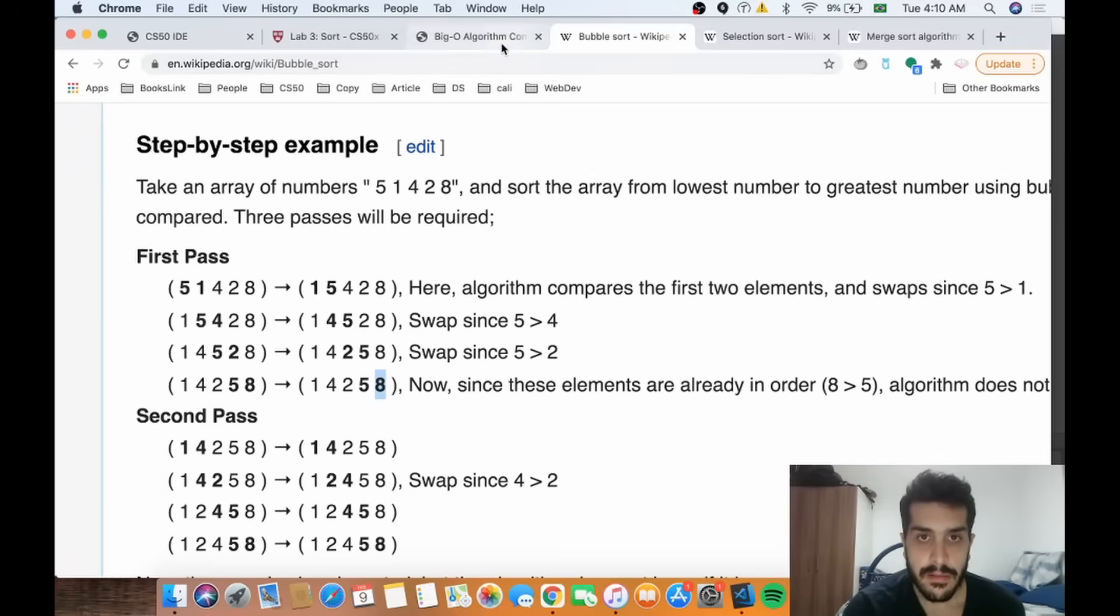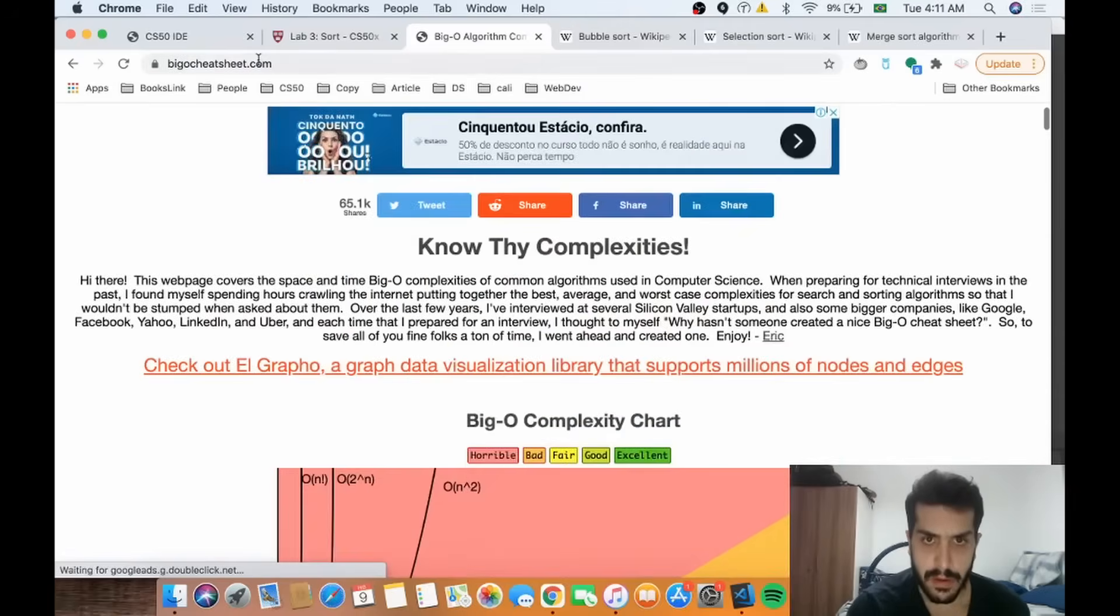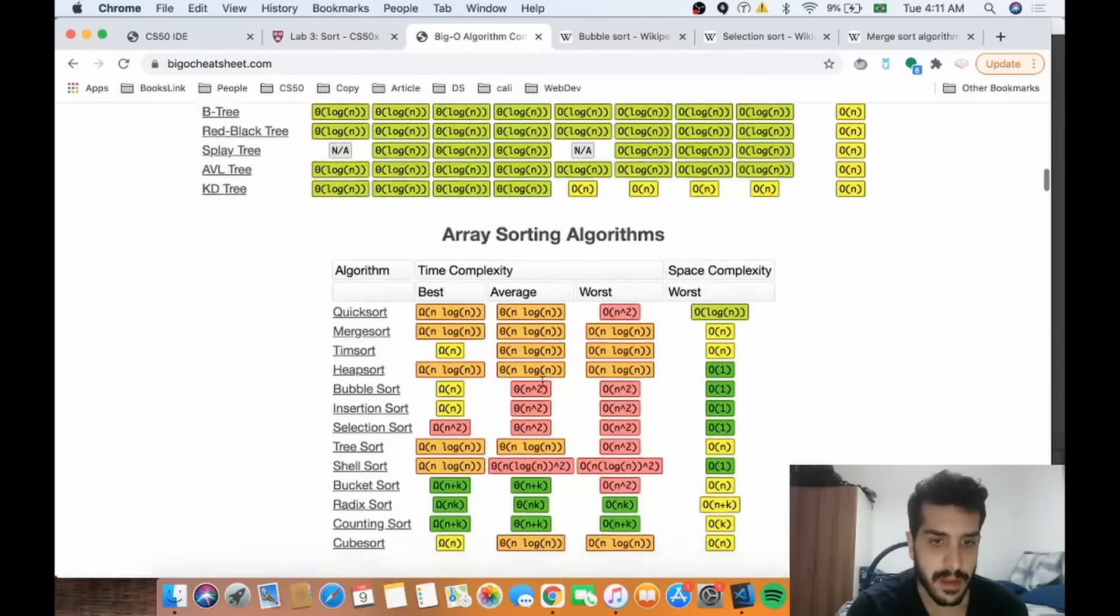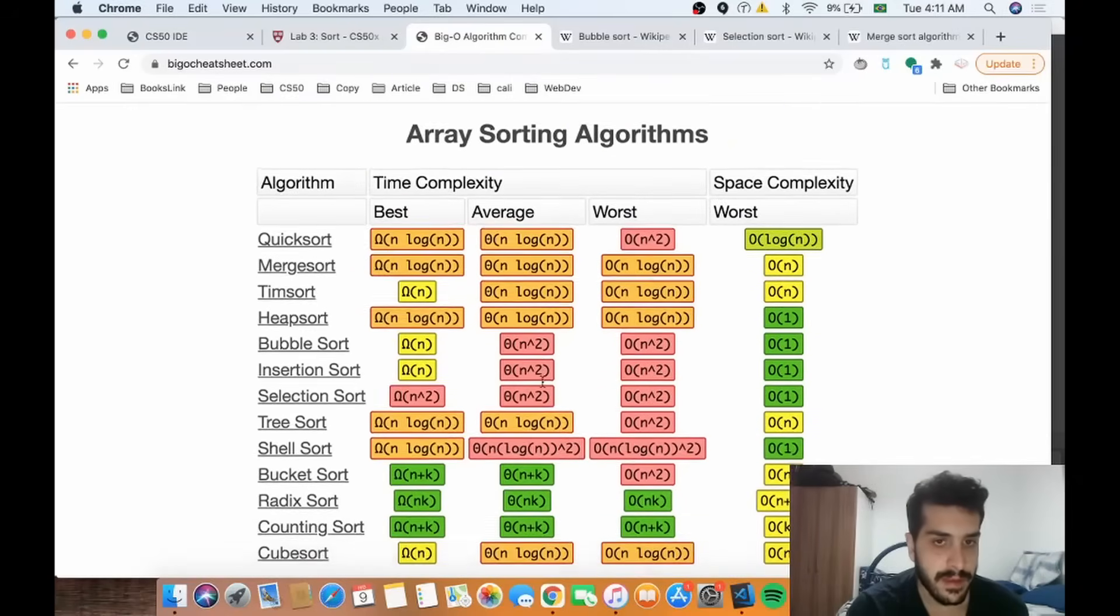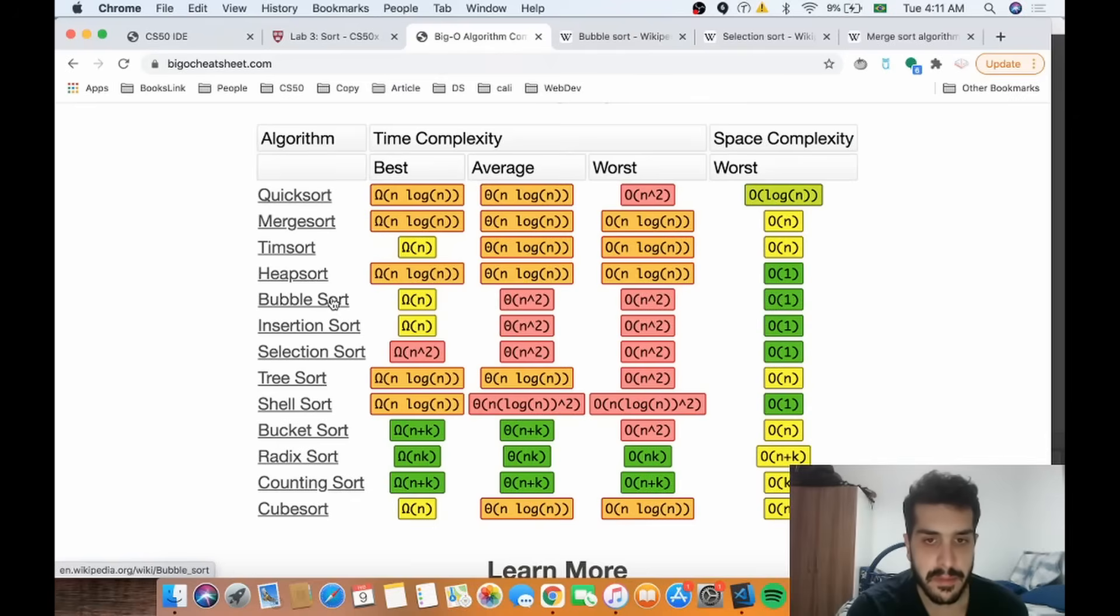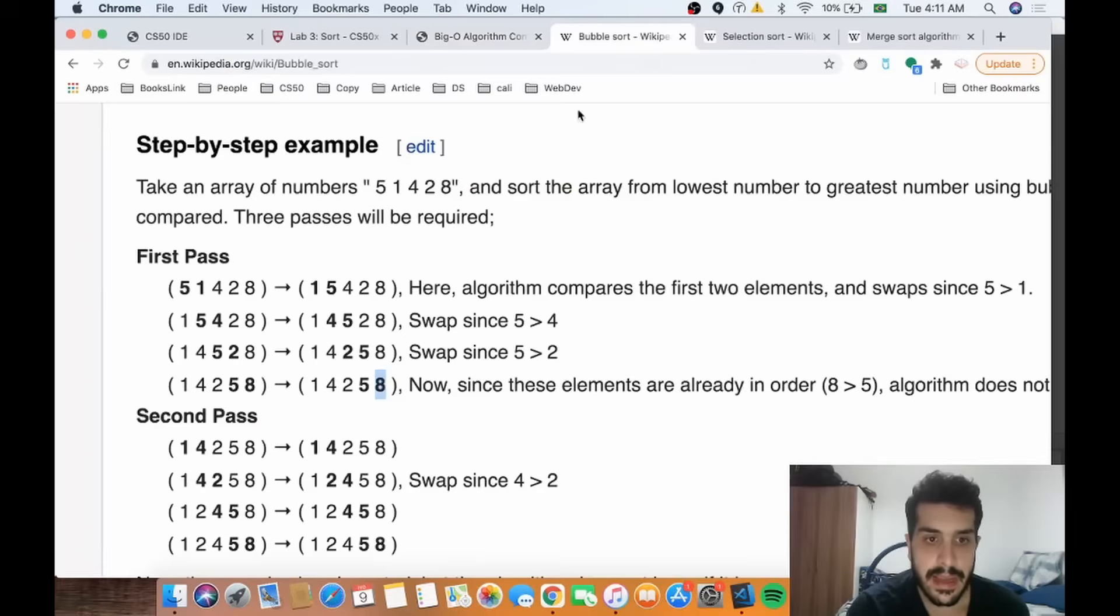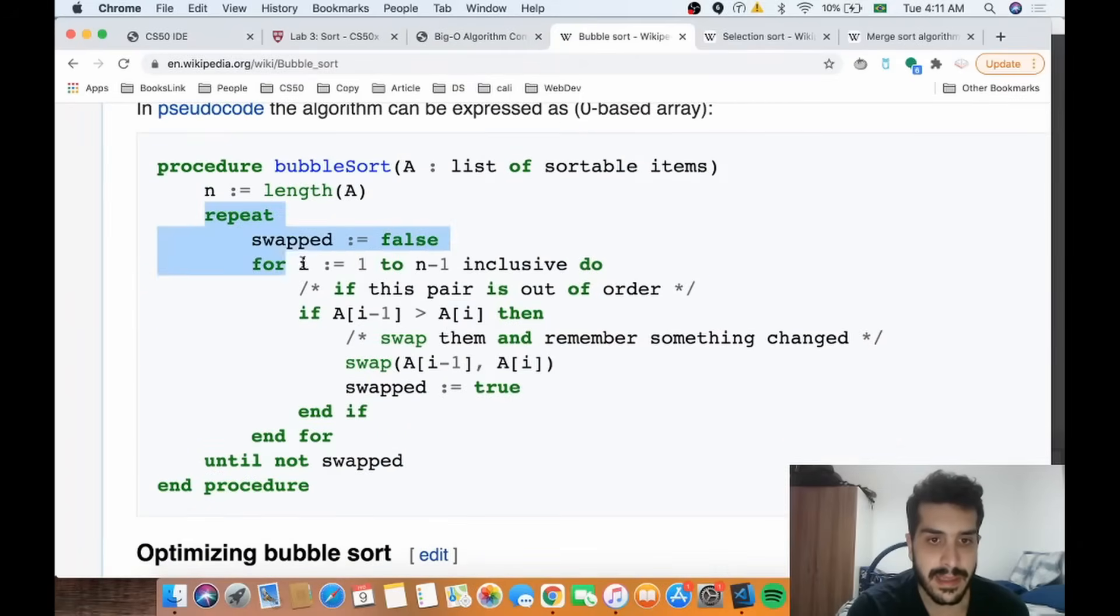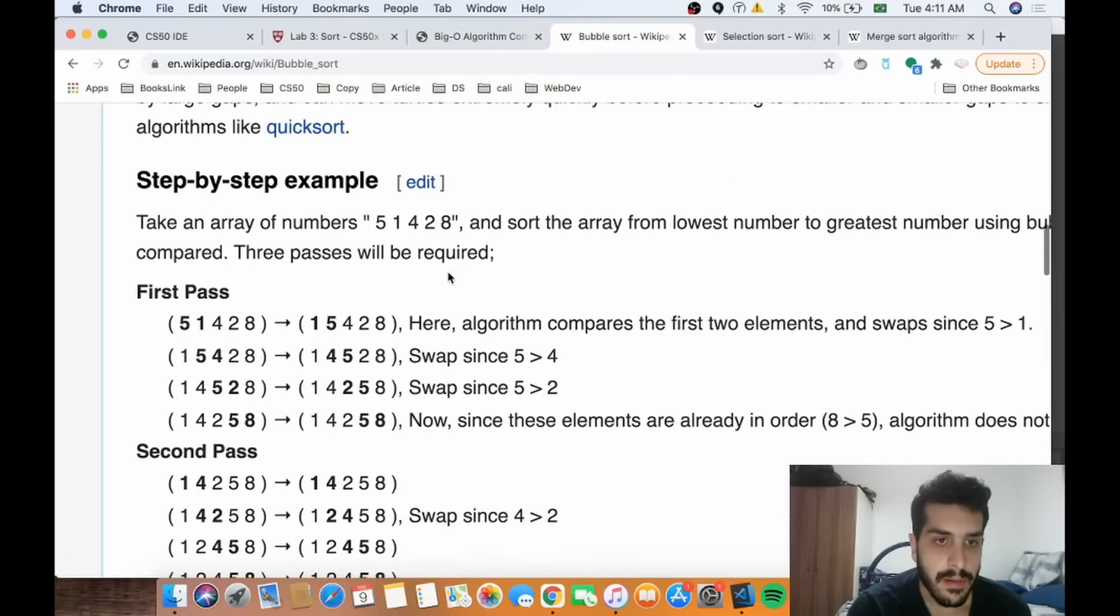So this really cool website called Big O Cheat Sheet gives you the Big O notations of the major algorithms. So let's take a look at bubble sort. The worst case scenario is O(n²). Let's look at the implementation - we basically have two for loops, so we'll place the largest value at the end.